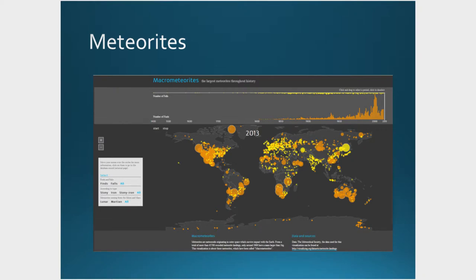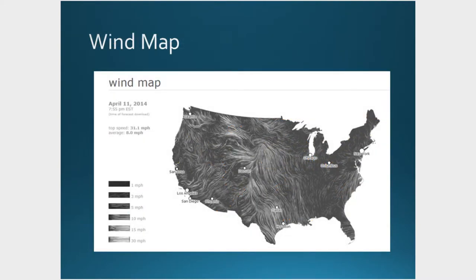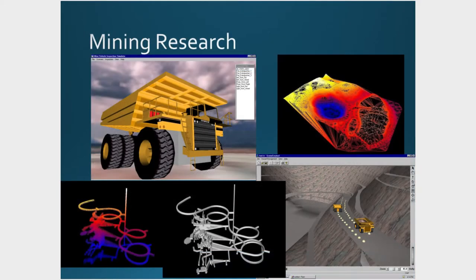There are other maps where we can plot meteorite strikes across the earth to see where they are and how big they were. Or if we were studying weather, I could show you wind maps to help us see that certain areas of my country are very high wind and certain areas are very low wind all the time, so we could discuss whether we wanted to have windmills in certain areas to generate electricity. Visualization is also important in mining research — above ground, open pit, or underground mines — to show how to do evacuation.